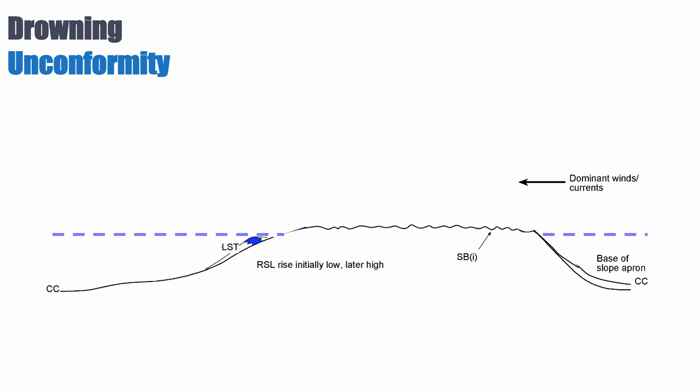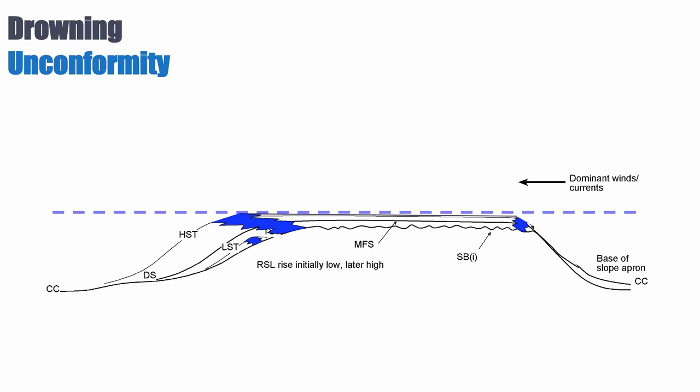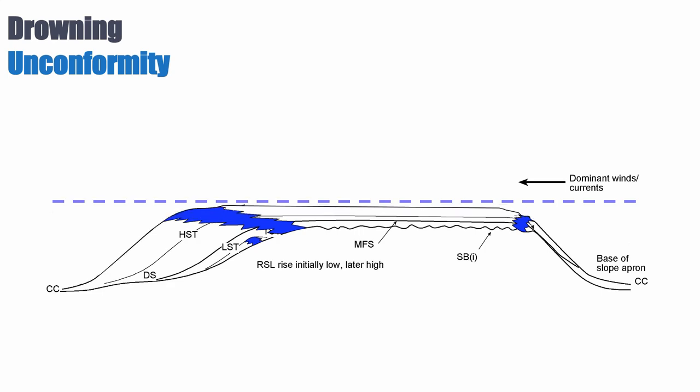So we have the lowstand wedge and then this is followed by of course a sea level rise, so we have the TST. Everything's fine in this case. The TST then covers the top of the platform, can keep up with base level rise, that means that we have this maximum flooding surface, we switch to the highstand and we go to maximum highstand and you can see everything's okay for that system.